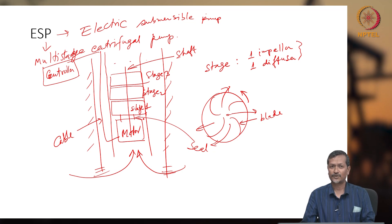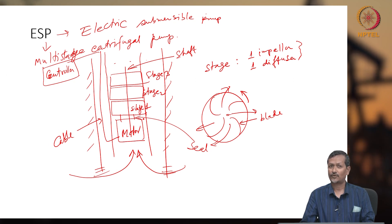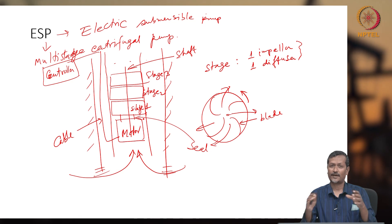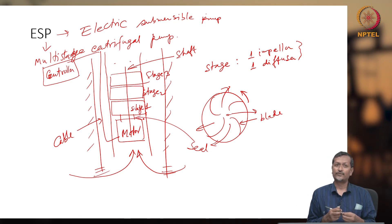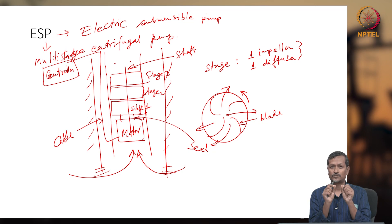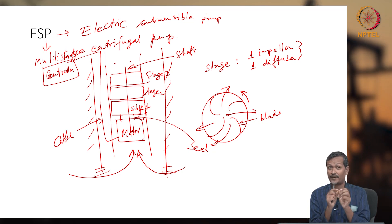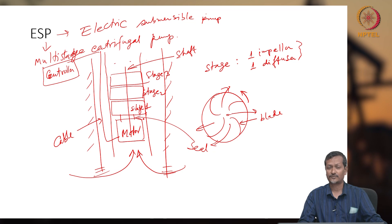Why is there a seal section between the motor and the stages? An electric motor is very sensitive to liquid like water. If water enters the motor, the motor coil can burn because the motor contains transformer oil. If well bore fluid — such as water — replaces the motor oil, short circuiting can occur inside and the motor can burn. Once it burns, you cannot work and must replace the whole system, which is very expensive.